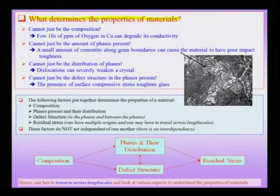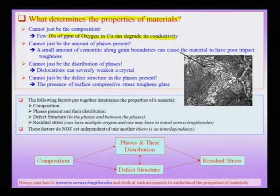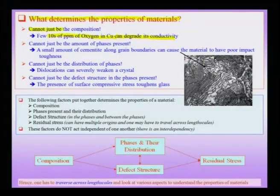The first thing we see: suppose I put in about a few tens of ppm of oxygen in copper — this would degrade its conductivity drastically. Therefore I need to go in for what is called oxygen-free high-conductivity copper to make my copper wires which are used for electrical conduction. Therefore, just knowing the composition cannot give me my properties; I need to consider further factors.